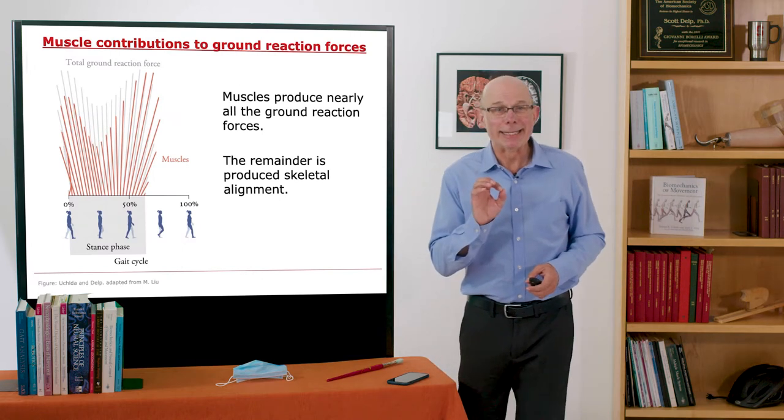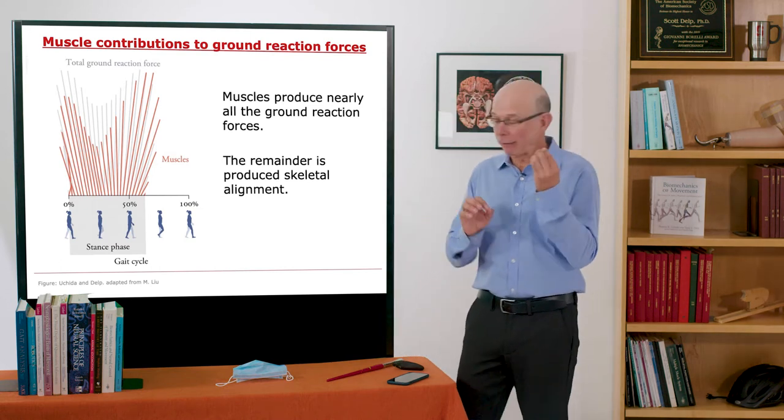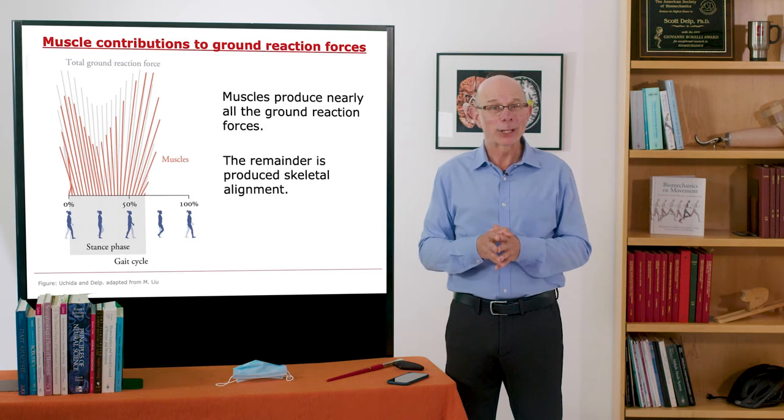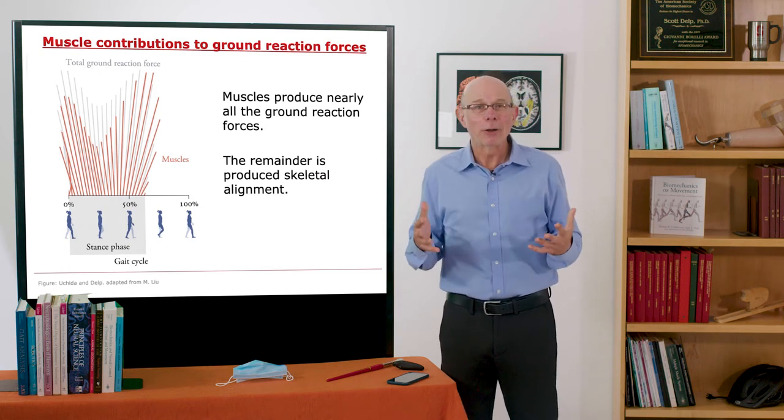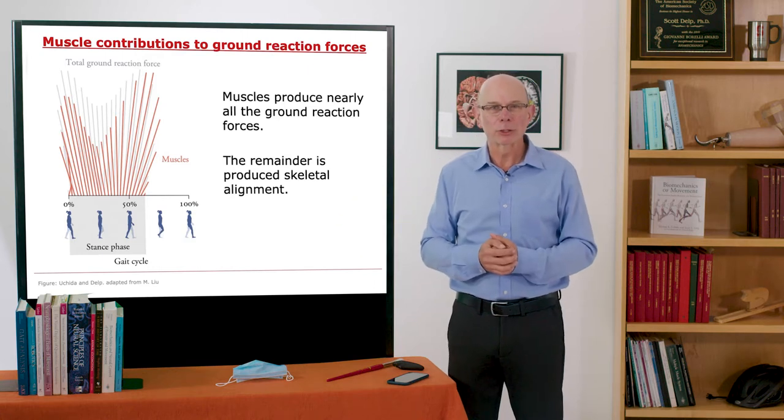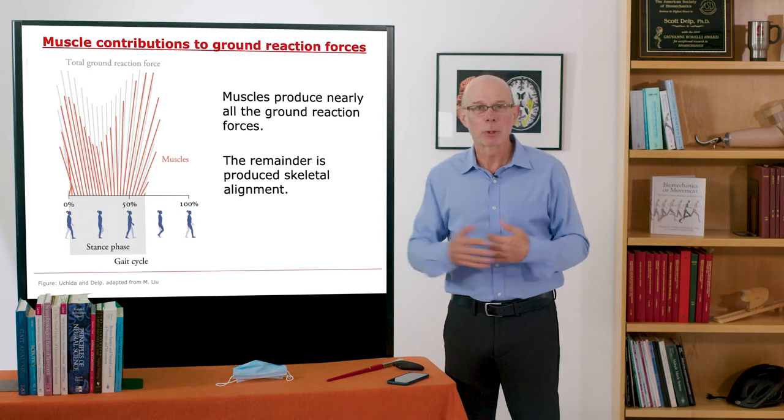Two basic things need to happen for walking. You need to get from point A to point B and not fall down. That's basically it. So we can figure out how we get from A to B by analyzing the ground reaction forces and how muscles support the body weight and regulate forward propulsion.